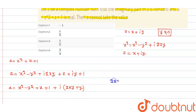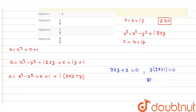Setting 2xy plus y equal to zero and taking y as common, we get y times (2x plus 1) equals zero. Since y cannot be zero, the only possibility is 2x plus 1 equals zero, which means x is equal to minus one half.